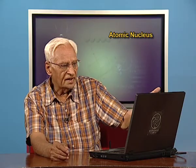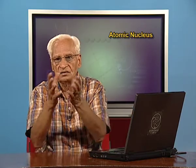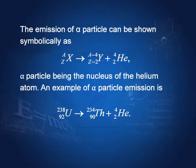An unstable nucleus can emit alpha particles. If nucleus X(A,Z) emits an alpha particle — which has 4 nucleons and 2 units of charge — then its mass number is reduced by 4 and its atomic number by 2, giving daughter nucleus Y(A−4, Z−2), with the alpha particle being He(4,2). You can verify: (A−4)+4 = A and (Z−2)+2 = Z, so charge and mass are conserved.